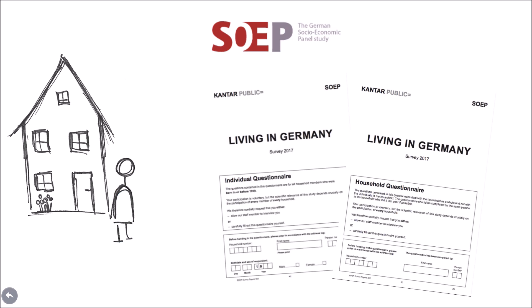These are the core instruments used in our study. The household questionnaire contains basic information about the household as such, including the number of household members, the type, size and condition of the dwelling, utilities and expenses, and other household-related financial issues. Information from the household questionnaire goes into the HL dataset.